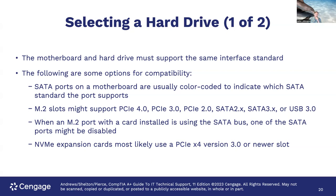When selecting a hard drive, the motherboard and hard drive must support the same interface standard. SATA ports on the motherboard are usually color-coded to indicate which SATA standard the board supports. M.2 slots might support PCIe 4, PCIe 3, PCIe 2.0, SATA 2.x, SATA 3.x, or USB 3.0. When an M.2 port with a card installed is using the SATA bus, one of the SATA ports might be disabled. NVMe expansion cards most likely use a PCIe x4 version 3.0 or newer slot.